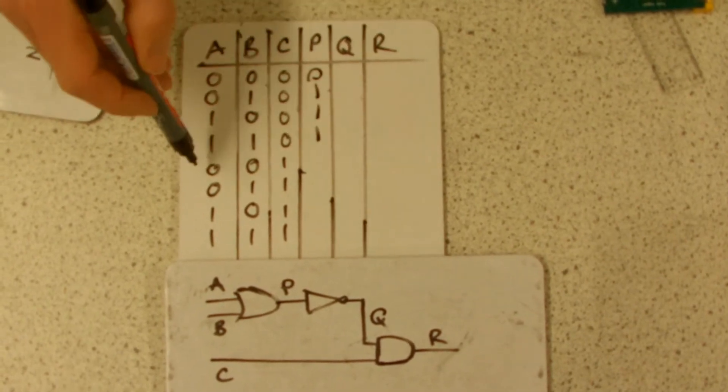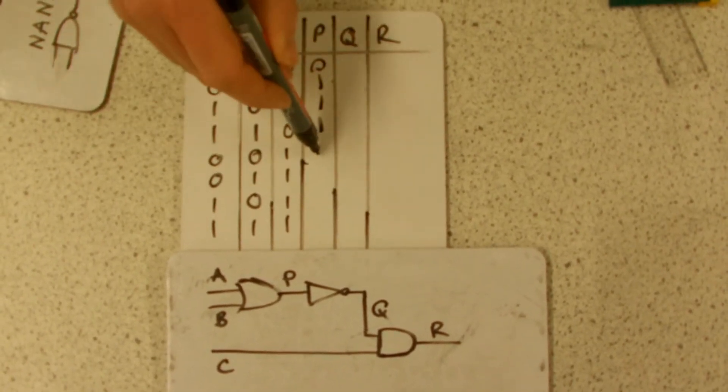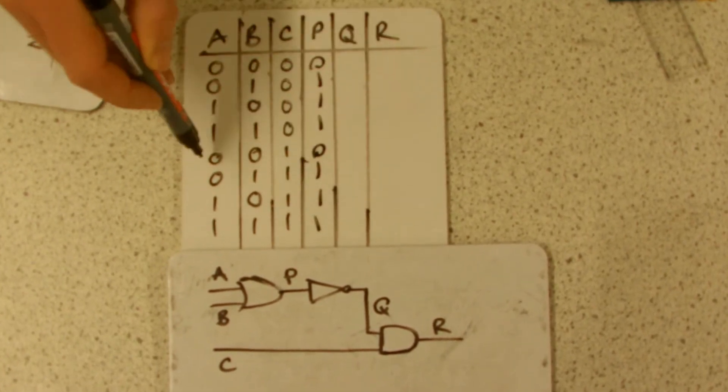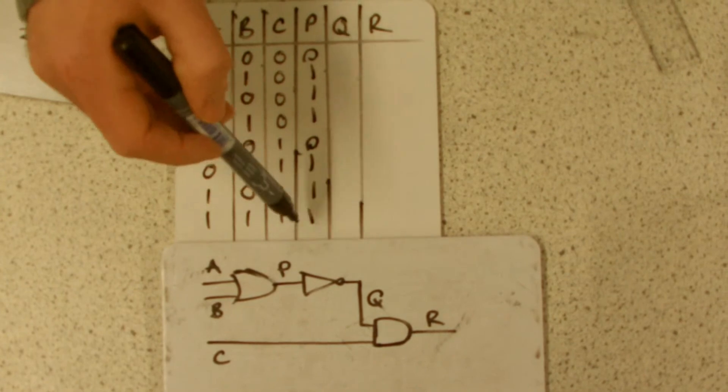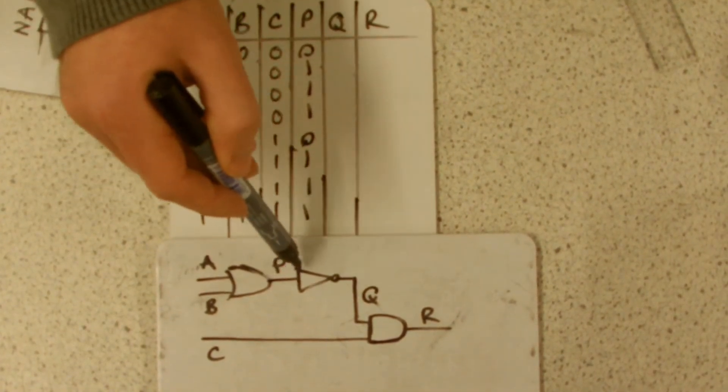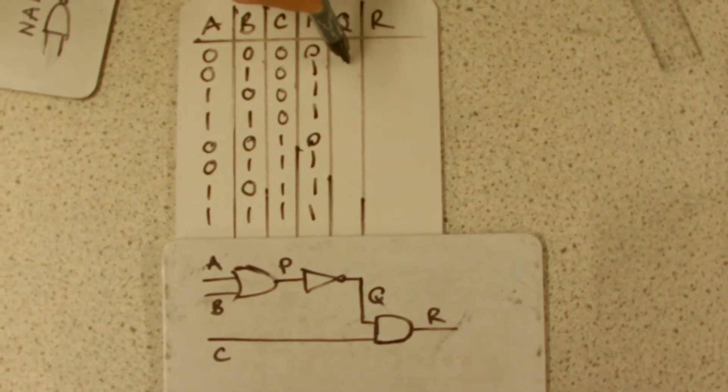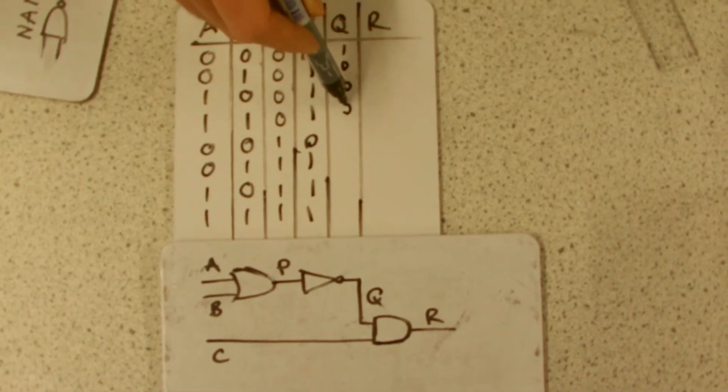And actually the next one is the same, so just copy that down. Then Q is after a NOT gate. It's P, but after a NOT gate. So you just have to do everything that P is NOT.